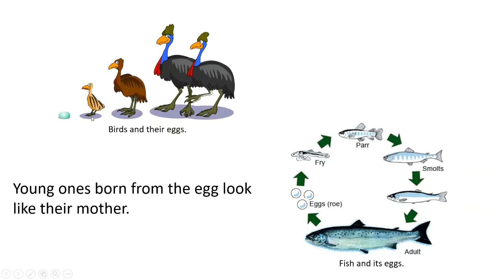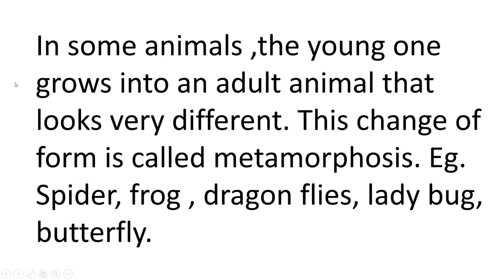Here I have a baby bird. As this baby bird grows into an adult, it looks the same. Here I have an adult fish, and this is what the fish looked like when it was small. The small fish also looks the same when it has grown up into an adult.